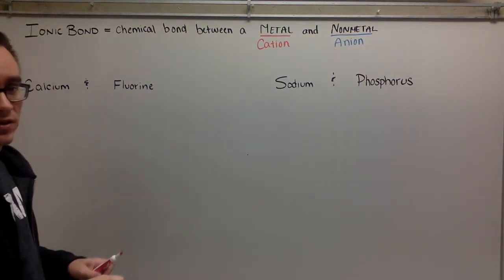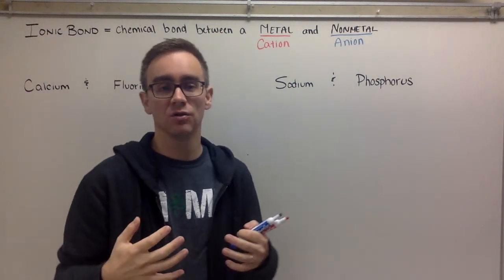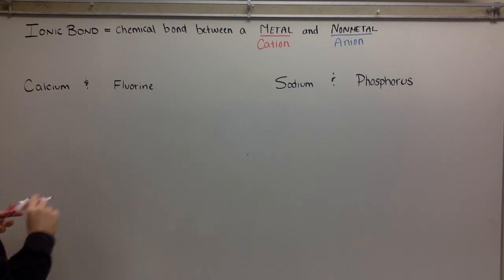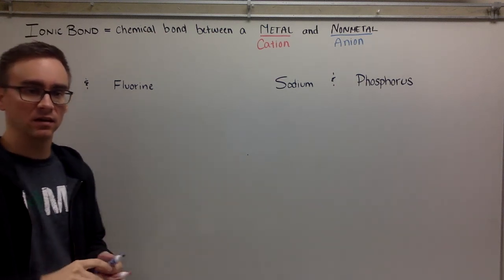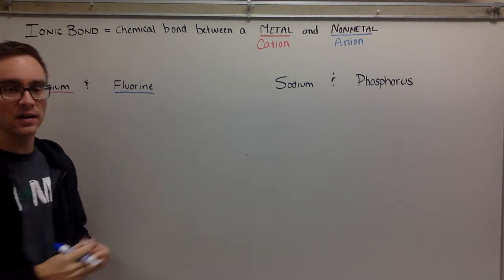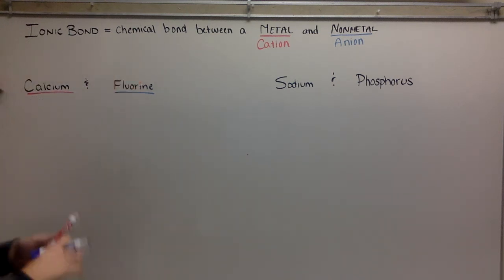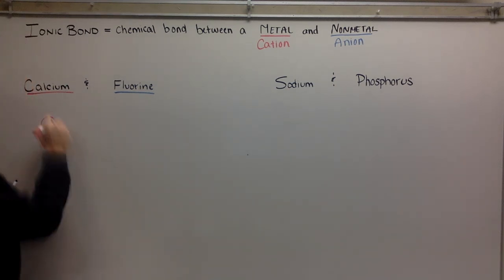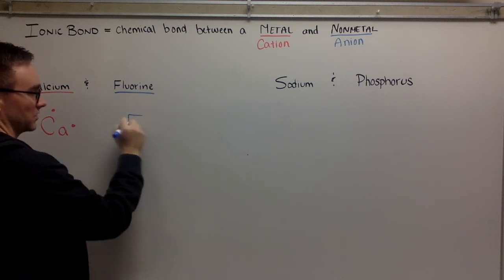So let's start with the first example — calcium and fluorine. We know calcium is a metal on the periodic table — it's to the left of that big black staircase. And fluorine, because it's to the right of the staircase on the periodic table, is a nonmetal. So we know we have one that's looking to lose electrons and one that's looking to gain electrons. Let's start with the Lewis dot structure. Calcium has two valence electrons to start. Fluorine has seven valence electrons, being in group 7A.